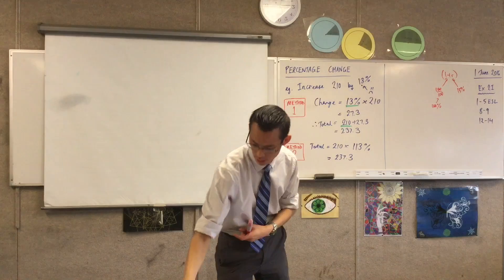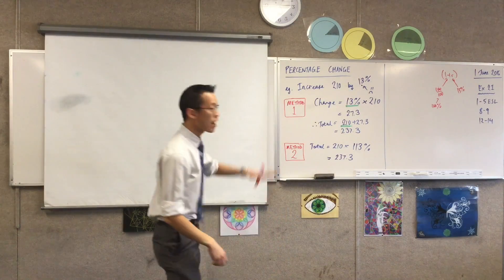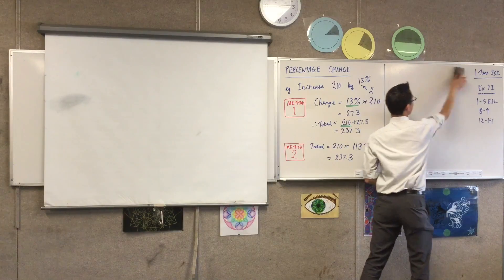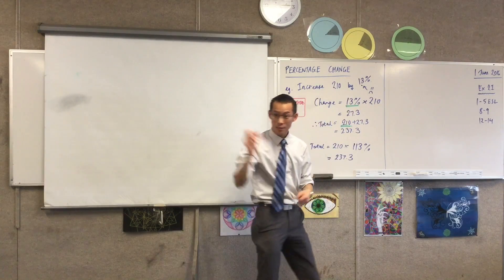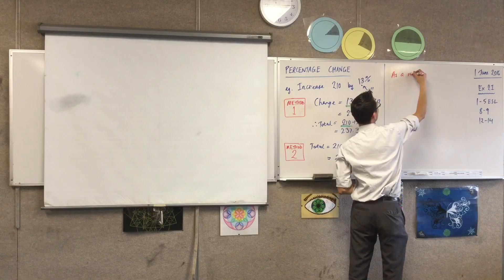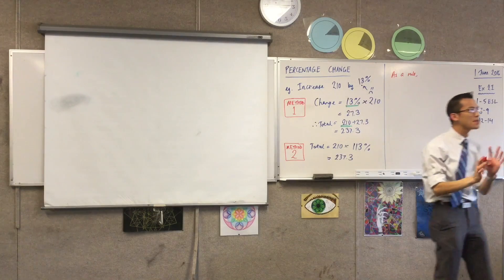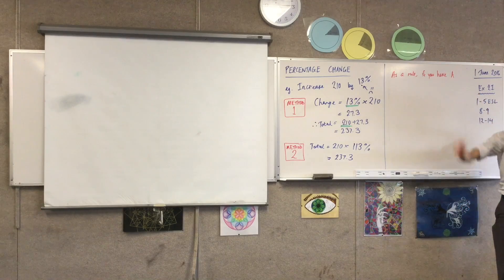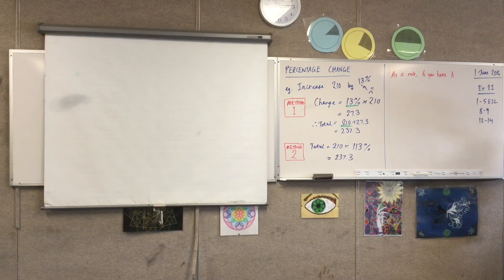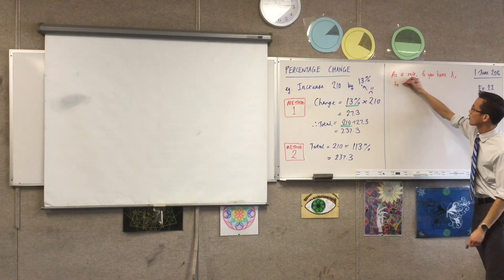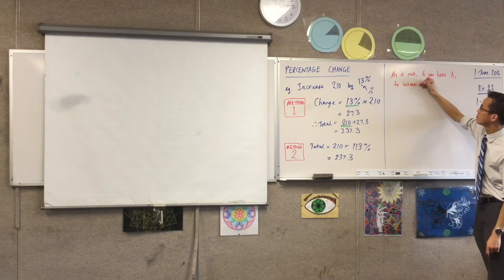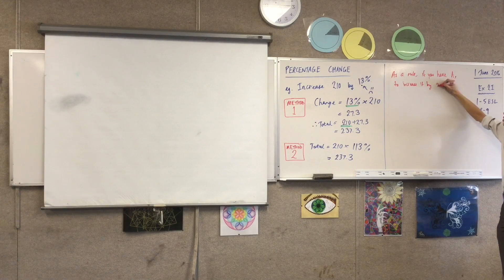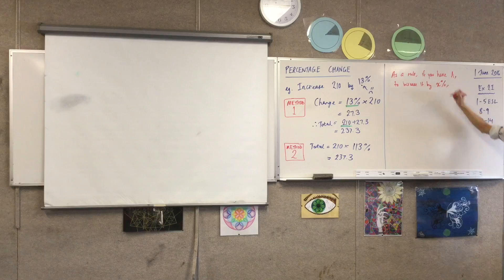Let's do what mathematicians love to do, and try and make a rule out of this, so that I don't have to work this out from scratch every single time. I'll just make this here. If you have another colour, write another colour. As a rule, if you've got any amount you like, let's call it A, as an amount, and you want to increase it, if you have A, to increase it by, any percentage you choose, so, being that it can be any number, I'm just going to call it X.